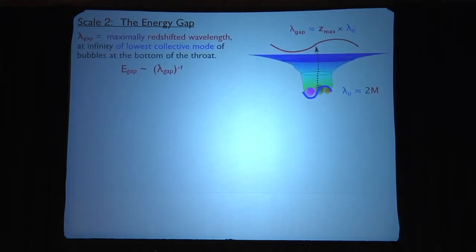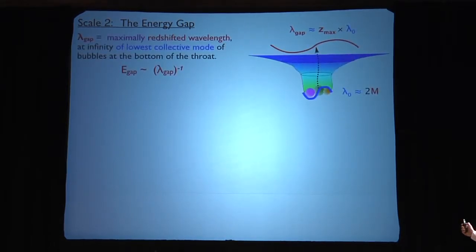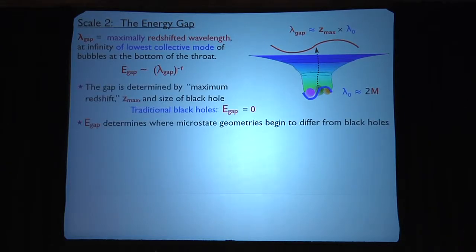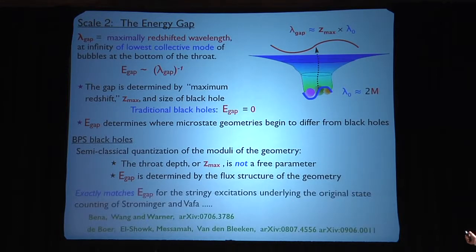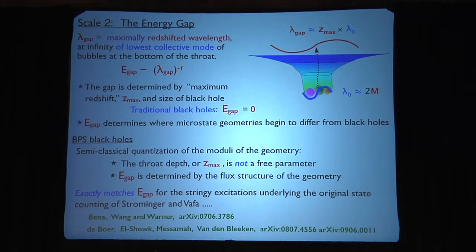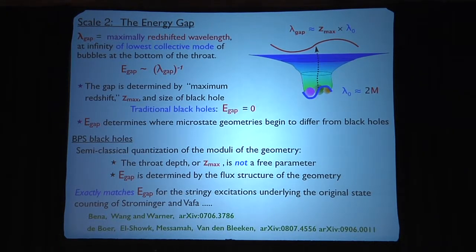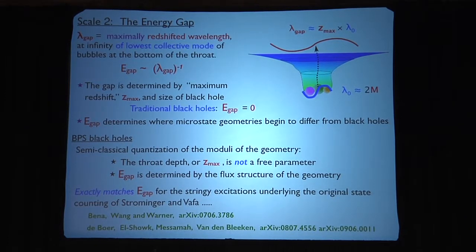The second scale. So you've got this would-be black hole capped off by some homology cycles. There's a largest wavelength collective oscillation of these things. And essentially, there is a limited redshift that you've got, because you've capped it off at some depth. And so basically, there is a gap wavelength, which is the maximal redshift times the largest collective mode you can put down there. And that defines, if you like, a gap energy. So this spectrum is now gapped. In an ordinary black hole, this is zero. There are zero energy excitations. But here, because you've capped the thing off, there is a finite energy gap in the spectrum. And if you like, you can think of it as determining where the microstate geometry actually begins to deviate from the black hole.